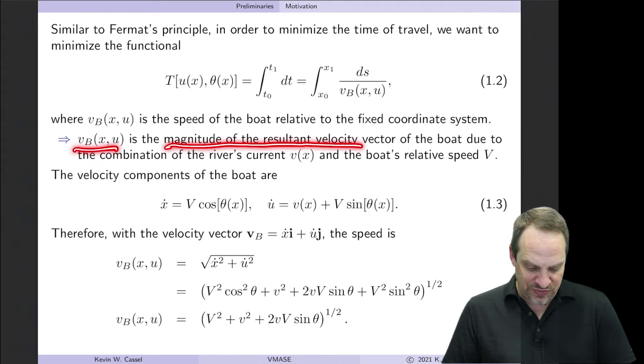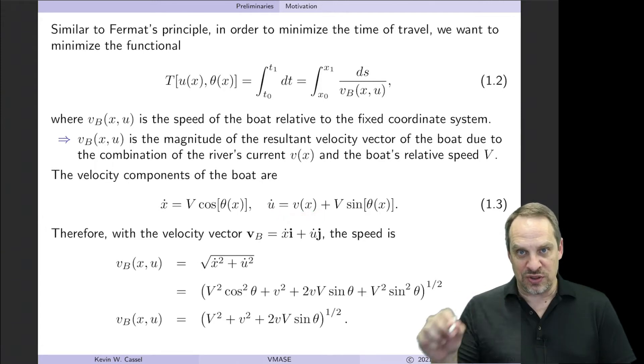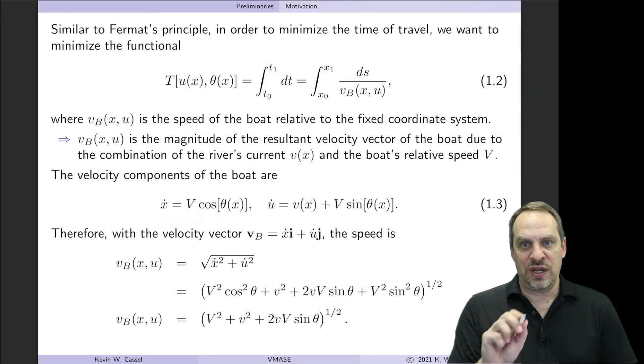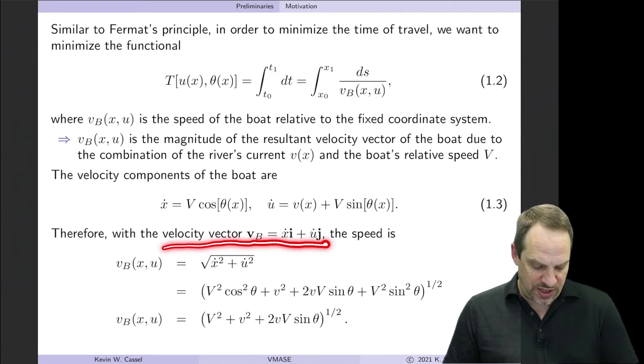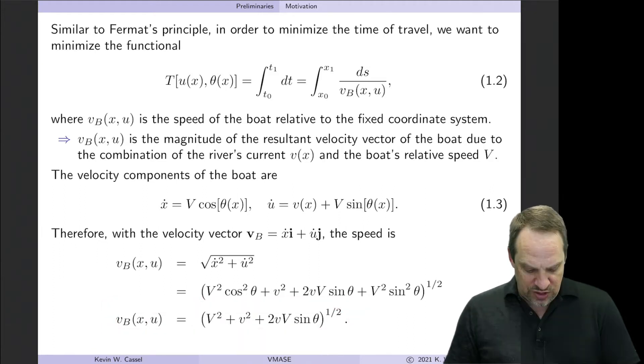Okay. So V sub B is the magnitude of the resultant velocity vector of the boat due to both of those contributions. So we can think of it in component form, dx/dt, or x dot, would be capital V times cosine theta, again theta being the heading angle, and U dot would be v(x), that's the local speed at that x location of the river, plus capital V times sine theta. And so those would give me the x and U components, so the cross-stream and downstream components of the velocity of the boat. We could then write the velocity as a vector, it would be x dot i plus U dot j. And so Vb then is the square root of the sum of the squares of those components. So I've just substituted those in here and simplified to get this expression. So this is an expression for the velocity of the boat, taking into account the velocity across the river, as well as the velocity and heading angle of the boat itself, relative to the river velocity.